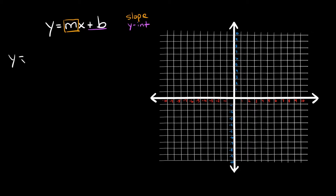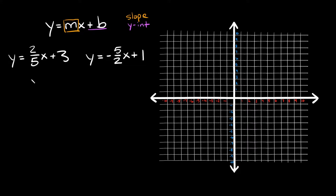Let me give you an example. Say you have these two equations: y is equal to two-fifths x plus three, and y is equal to negative five-halves x plus one. Are these two linear equations perpendicular? To check that you just have to check their slopes. On the first equation the slope — the number next to the x — is positive two-fifths, and on the second equation the slope is negative five-halves.